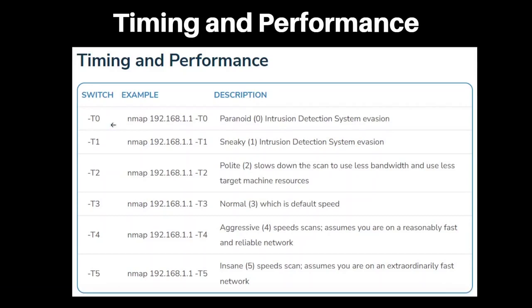Option dash T0 is the most paranoid and slowest speed option. It is designed to evade intrusion detection systems by slowing down the scan and avoiding detection. T1 is slightly faster than T0 and is also designed to evade intrusion detection systems.